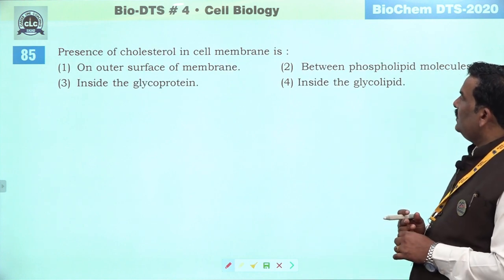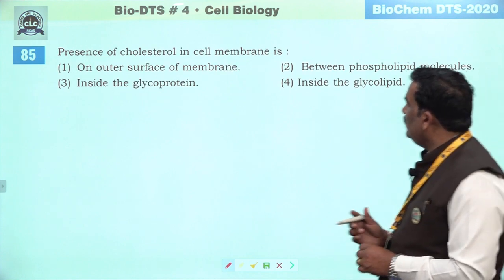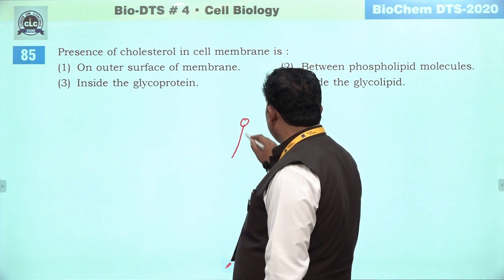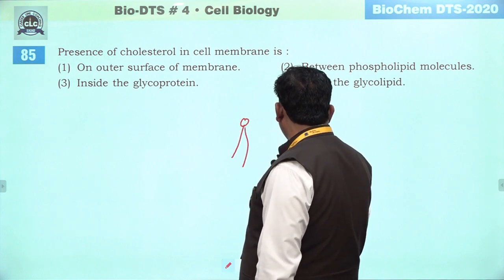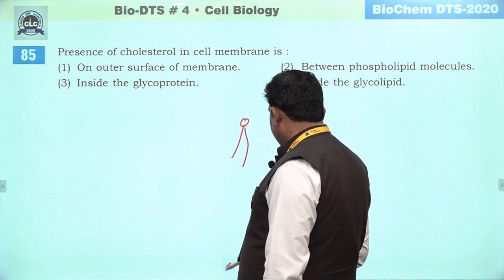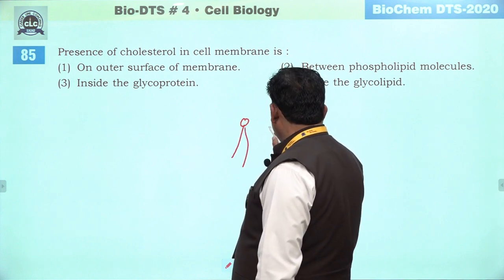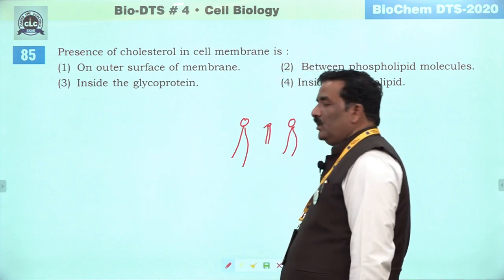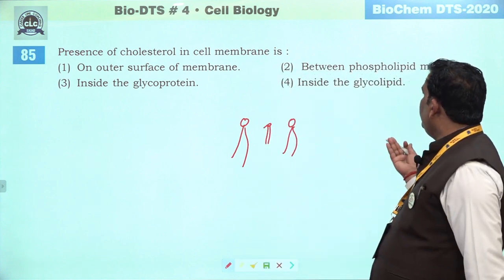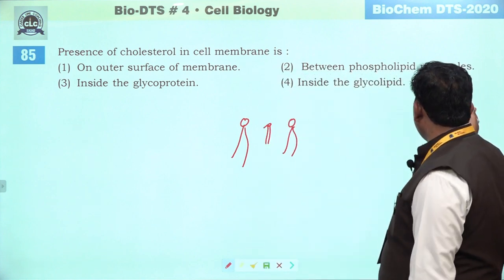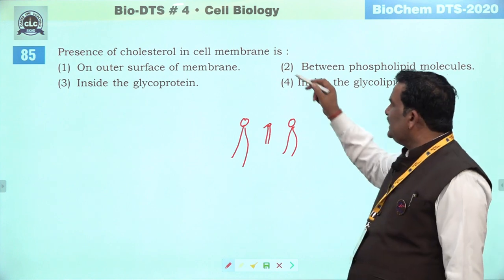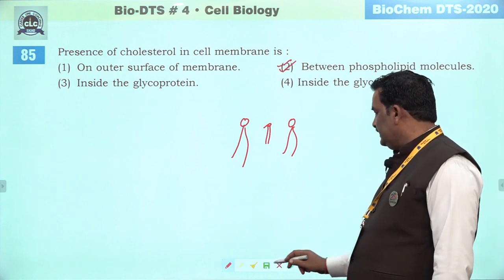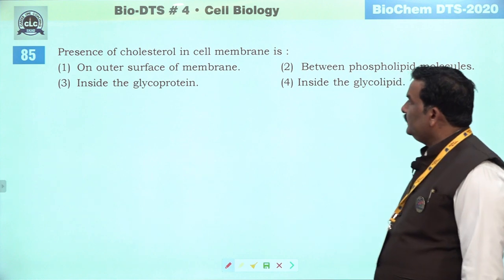Next question: presence of cholesterol. NCRT mein diagram hai — usमें hum dekhen to phospholipid ki presence kuch is tarikay se hai — inke beech mein yahan par hume cholesterol ke molecules nazar aate hain. Isliye 'between phospholipid molecule' kehna zyada sahi hai. Second humare paas right answer hai.